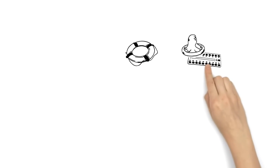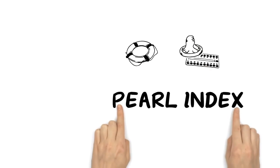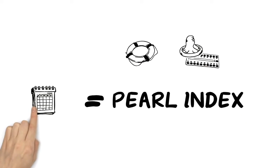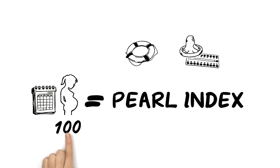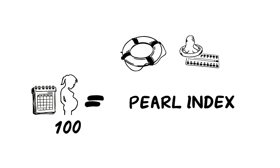You can check the safety of a method through the PEARL index, which calculates the annual number of pregnancies per 100 women. The safer a method, the lower the value.